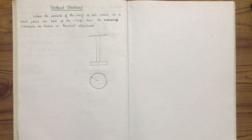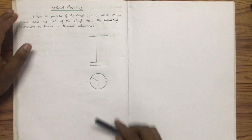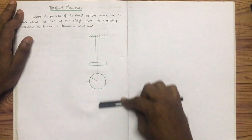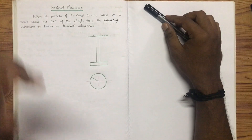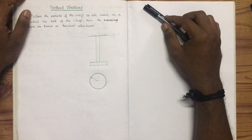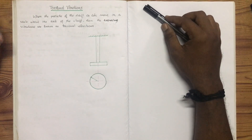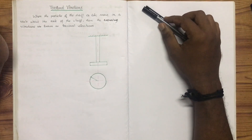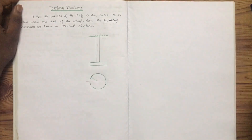We are going to build module 6. In module 6, there are theory portions: Transmissibility, Vibration Isolation, Vibration Measuring Instruments, Seismometer, and Accelerometer. These are very important things. The theory is worth 6 marks or 10 marks.